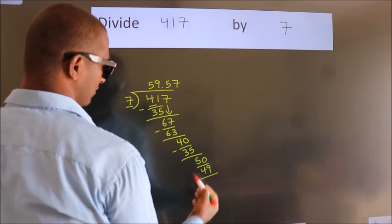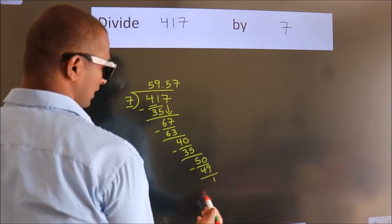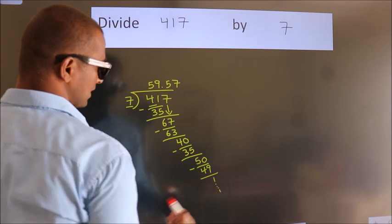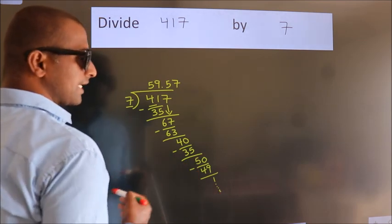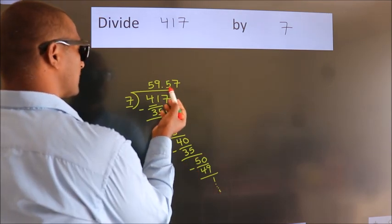Now, we subtract. We get 1. And you continue the division. It is enough if we do up to 2 decimal places.